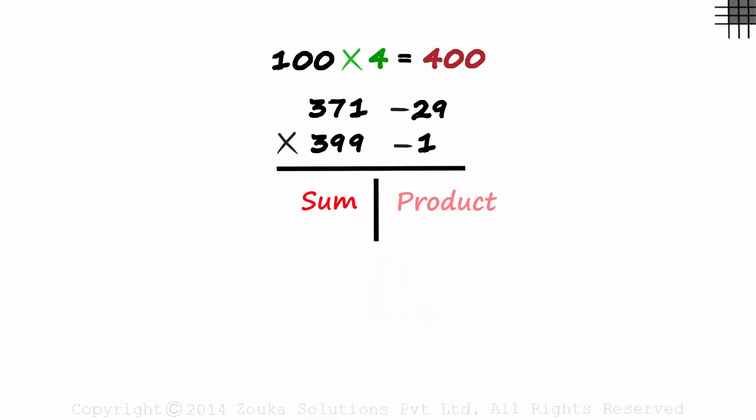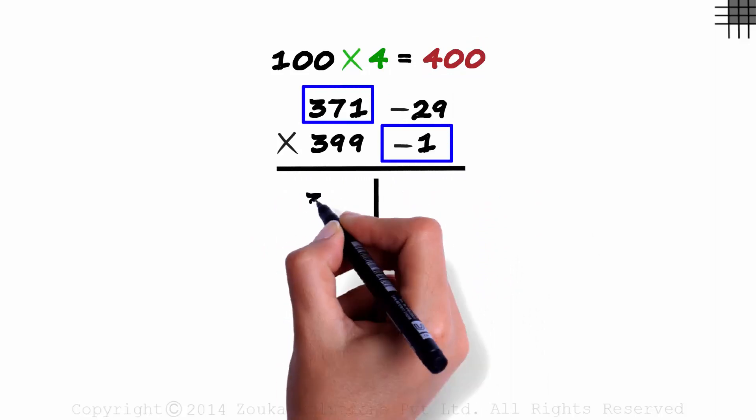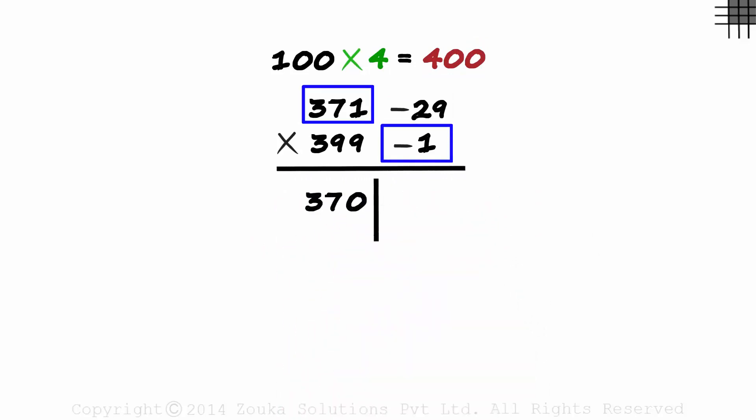Sum on the left and the product on the right. 371 minus 1 is equal to 370. And on the right we will have minus 29 multiplied by minus 1, which equals 29.